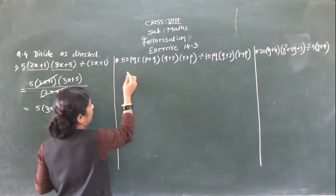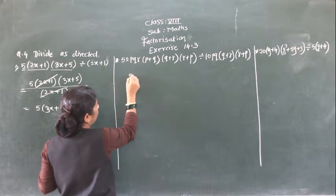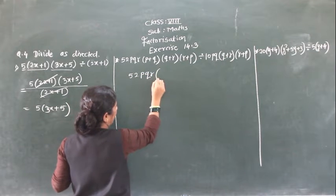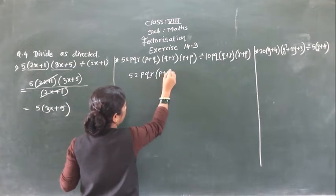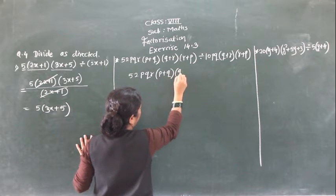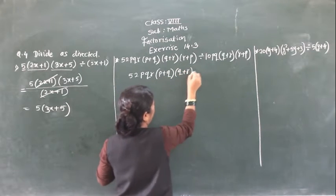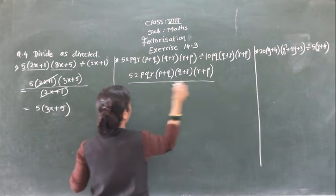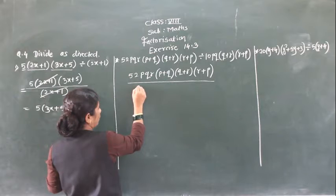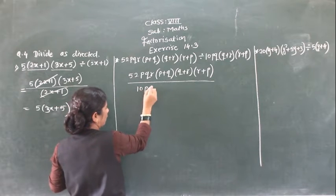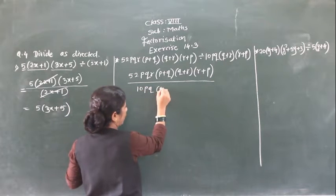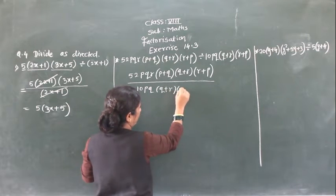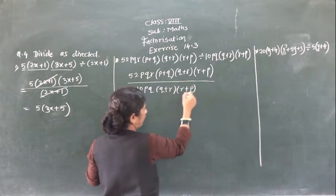Now next example, number 52: P times 2 times R in bracket (P plus 2), second bracket (Q plus R), third bracket (R plus P), divided by — take P, 2 in bracket (2 plus R) and same bracket (R plus P).